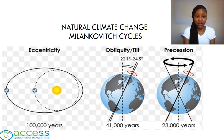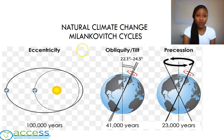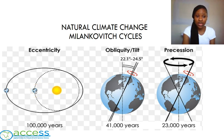In the first cycle, known as eccentricity, the shape in which the Earth orbits around the Sun gradually changes from a circular shape to a more elliptical shape. This means that at some point the Earth is closer to the Sun, while at other points it is much further away. This cycle takes about 100,000 years to occur.